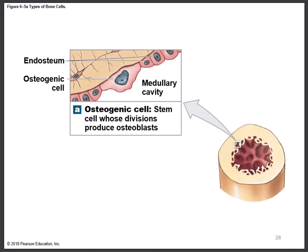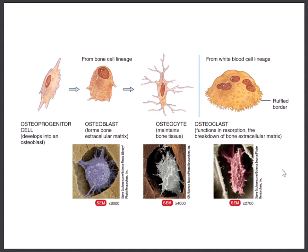Looking at Tortora's interpretation, they call it the osteoprogenitor cell — Martini calls it osteogenic, Tortora calls it osteoprogenitor. When the osteoprogenitor cell is stimulated, for example from a fracture, it will produce the next bone cell known as the osteoblast. The diagram shows the progression from one cell to the next.